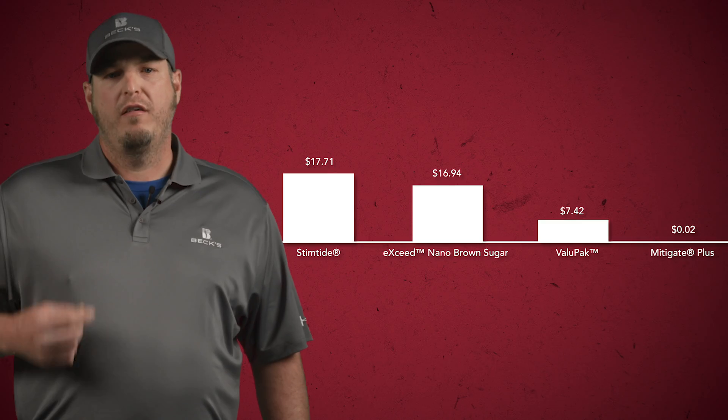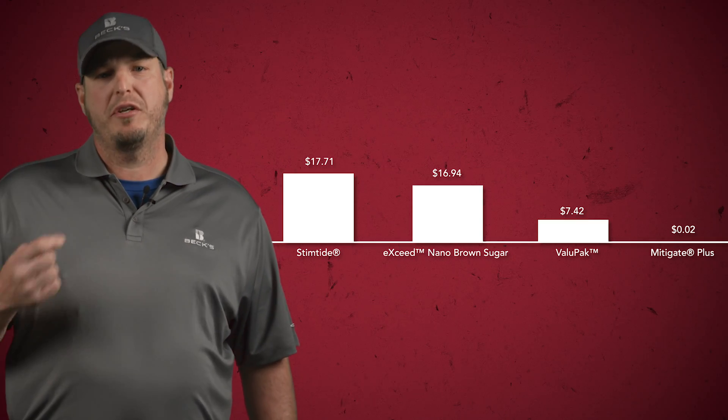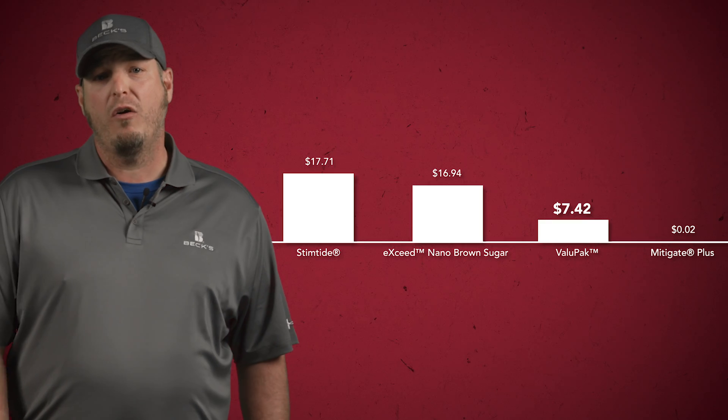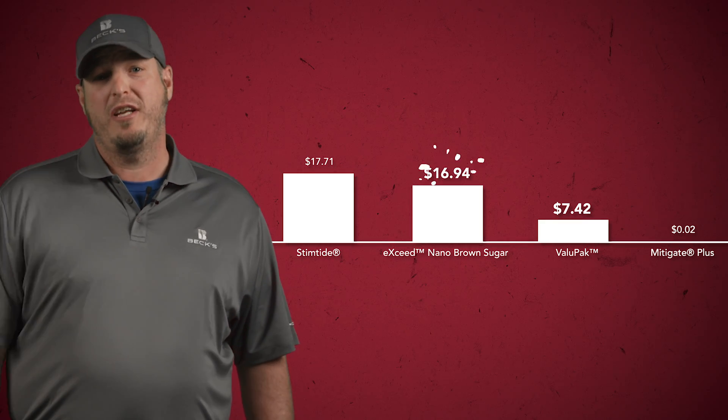Stemtide contains plant peptides to help reduce plant stress from drought, cold weather, and the effects of herbicide applications. It also aids in root growth and development to improve nutrient uptake and plant metabolism. Value Pack and Exceed Nano Brown Sugar have also shown great results — Value Pack with a little over $7 ROI and Exceed Nano Brown Sugar with almost $17 ROI. Value Pack is a 7-12-1 foliar fertilizer blend that delivers nutrients effectively to the plant throughout the growing season, labeled to help plants retain pods which are often aborted under stress. Exceed Nano Brown Sugar is a sugar product that provides instant energy to the plant and the biology colonizing it.